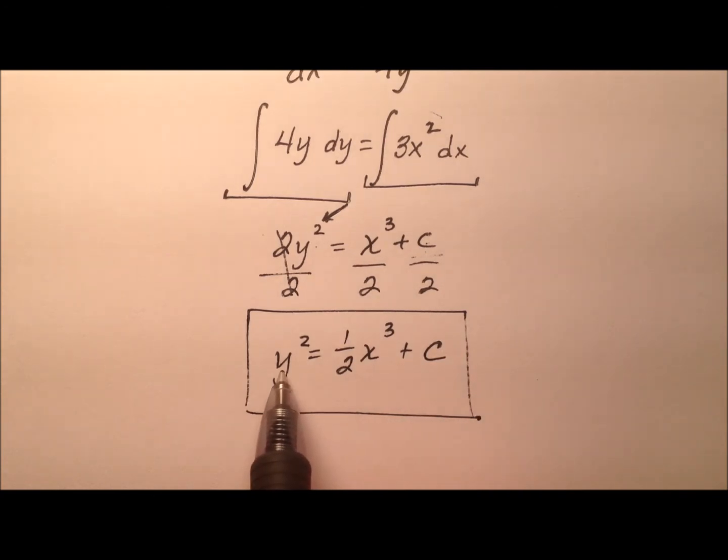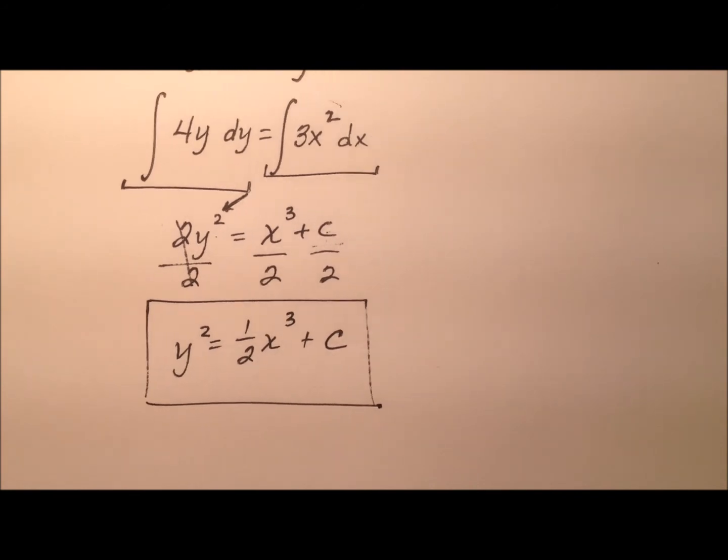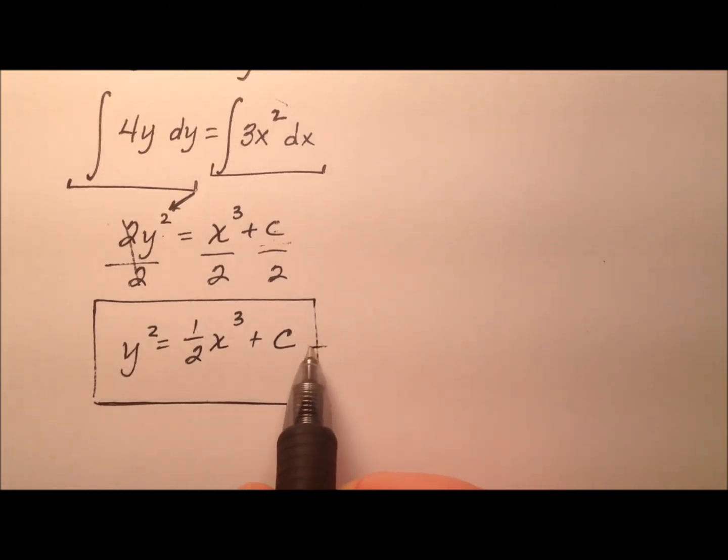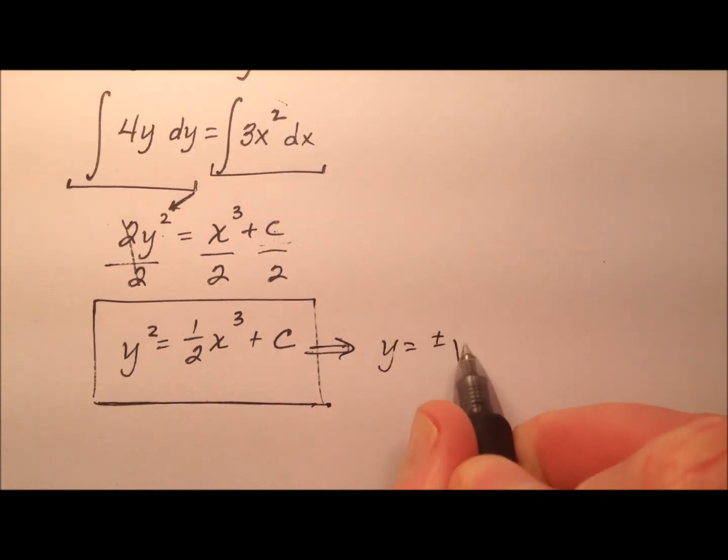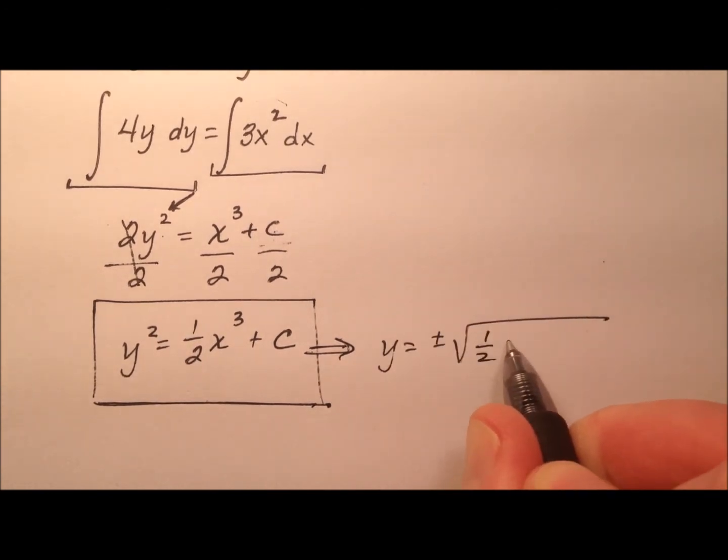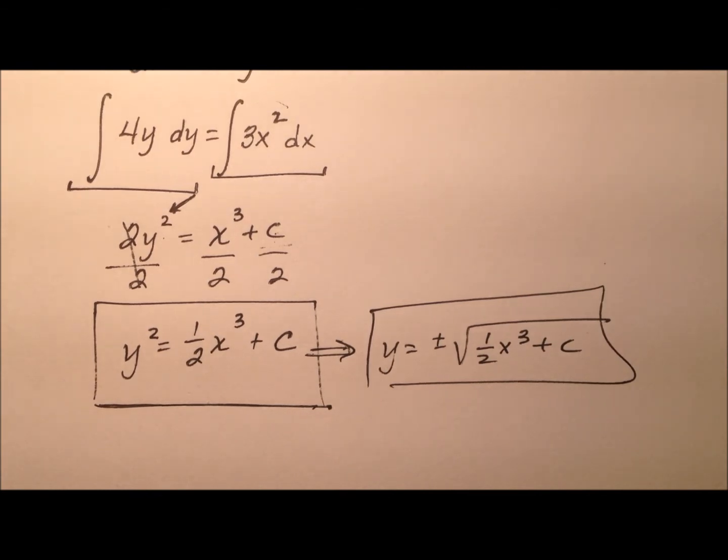And sometimes we're okay with writing the answer this way. The y is not all by itself. But if we take the square root of both sides, we'll have the plus and minus to kind of contend with. So sometimes this is okay. Or quite frankly, it really is okay just to put that plus minus. And then we have the 1/2 x³ plus c. And this solution is acceptable as well. So here's how to find the general solution for a pretty straightforward separable differential equation.